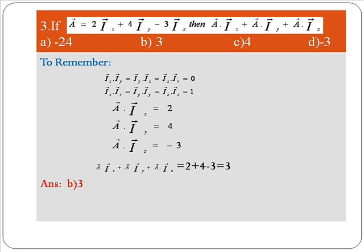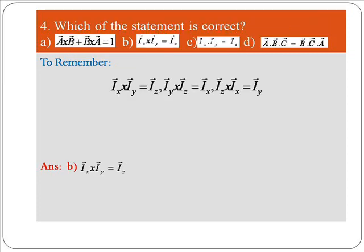Third problem: if A vector equals 2 i_x + 4 i_y − 3 i_z, what is A·i_x + A·i_z? Here i_x, i_y, i_z are unit vectors. Recall that the dot product of different unit vectors is zero — i_x·i_y = i_y·i_z = i_z·i_x = 0 — and the dot product of the same unit vector equals 1. Using these properties, the answer is 3, which is option B.